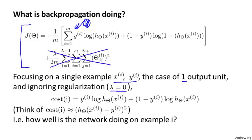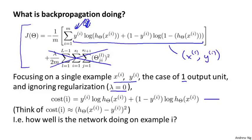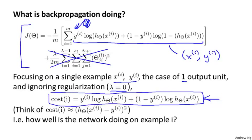Inside this summation, the cost term associated with the i-th training example — the cost associated with training example xi, yi — is given by this expression. This cost function plays a role similar to the squared error. Rather than looking at the complicated expression, you can think of cost(i) as approximately the squared difference between what the neural network outputs versus the actual value, just as in logistic regression. This cost of i measures how well the network is doing on correctly predicting example i — how close the output is to the actual observed label yi.